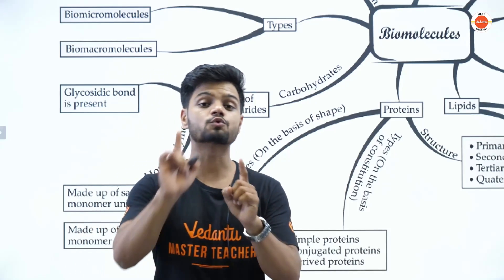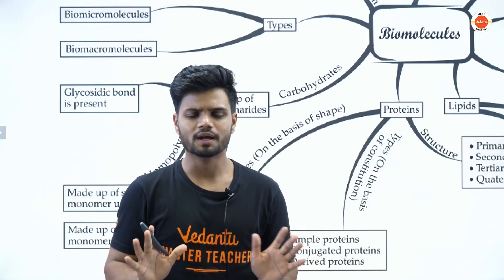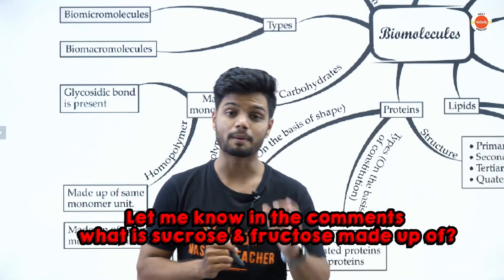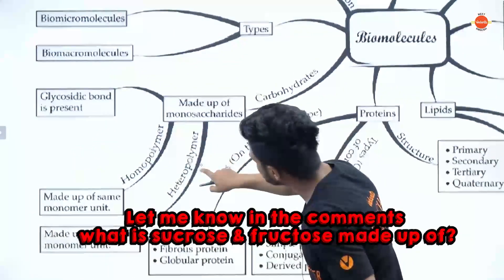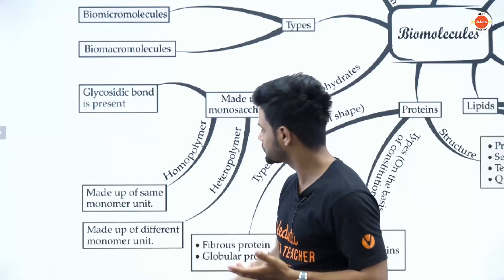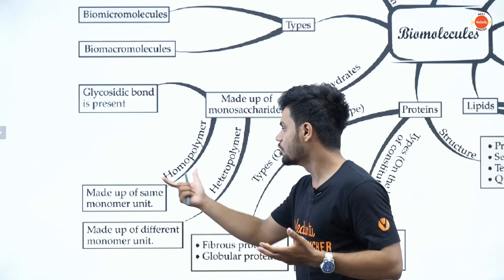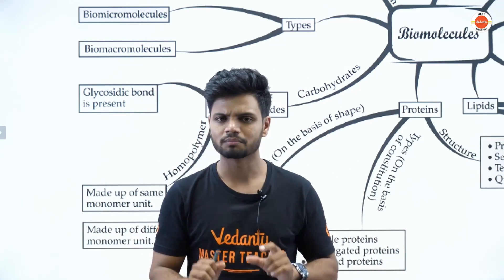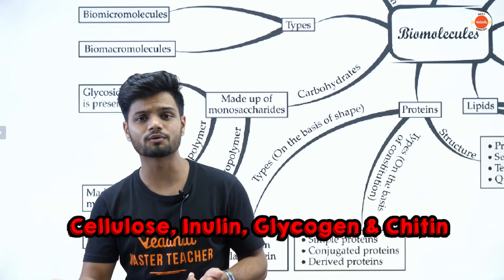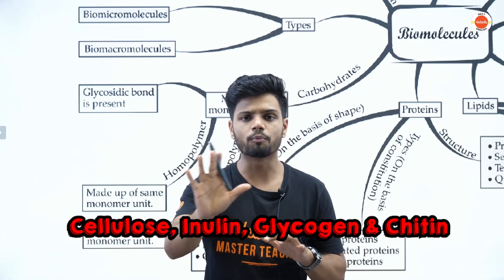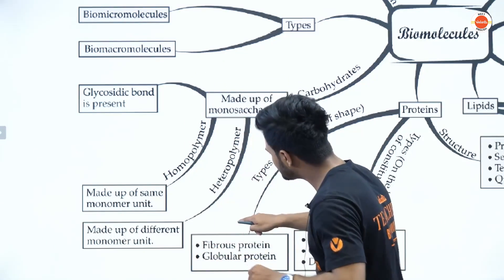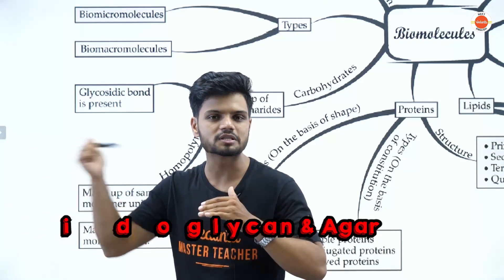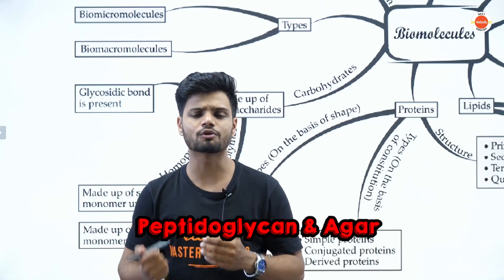Disaccharides include sucrose and fructose. Polysaccharides are divided into two types: homopolysaccharides and heteropolysaccharides. Homopolysaccharides are made up of only a single repeated monomeric unit — examples are cellulose, inulin, glycogen, and chitin. Heteropolysaccharides have different types of repeating units — examples are NAG and NAM found in peptidoglycan, and agar is also an example.